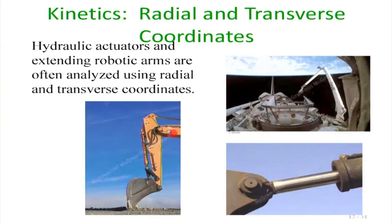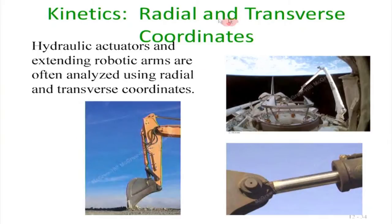We have discussed kinetics in Cartesian coordinates and kinetics in tangential-normal coordinates. Now we discuss kinetics in radial eᵣ and transverse eθ coordinates. These are important for problems like a rotating crane arm, where the geometry is naturally suited to radial-transverse coordinates.